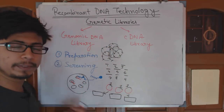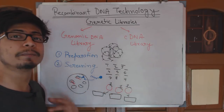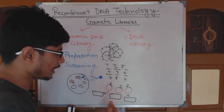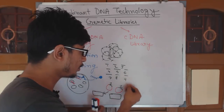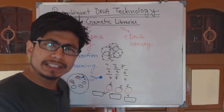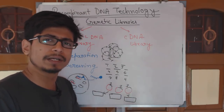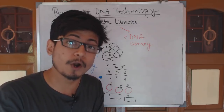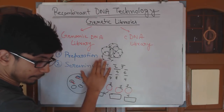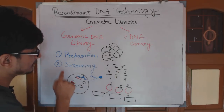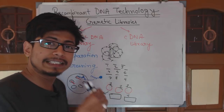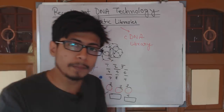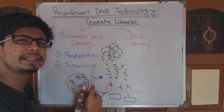Now believe me, the creation of a genomic DNA library is tedious, but screening is much more complicated. Because in creation, sometimes most of the cells get the same type of genes and some genes may not be inserted in any of the cells. So these things happen — you need to recheck multiple times to make sure all the desired genes are inserted into the vector and into the host cell properly.